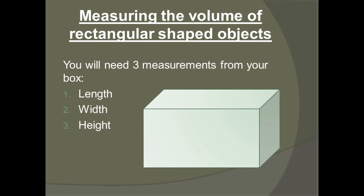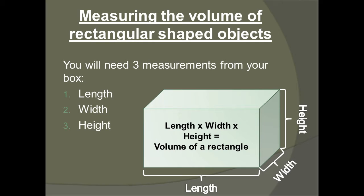It's easy to measure the volume of regular shaped objects, like a rectangular box. To get the volume for a rectangular box, you need three measurements. The first one is the length of your box, the second one is the width of your box, and the third one is the height of the box. So you take those three measurements and multiply length times width times height, and that gives you the volume of your rectangular box.